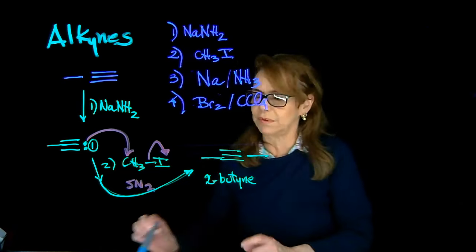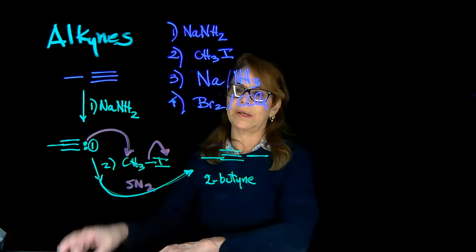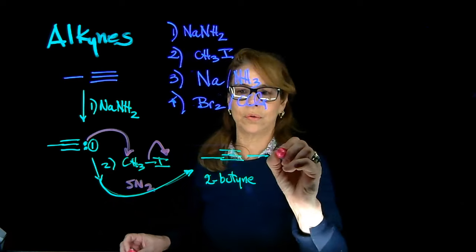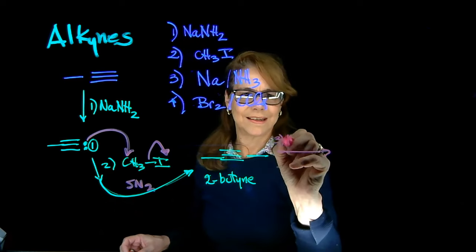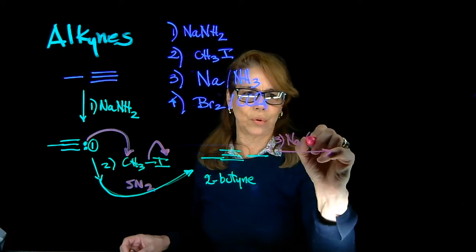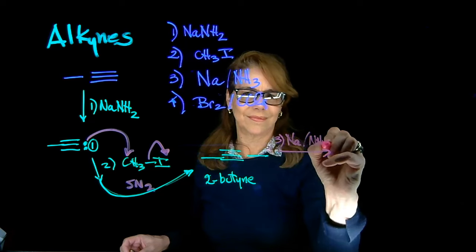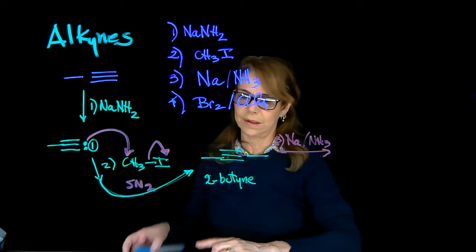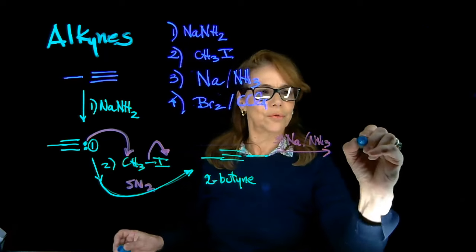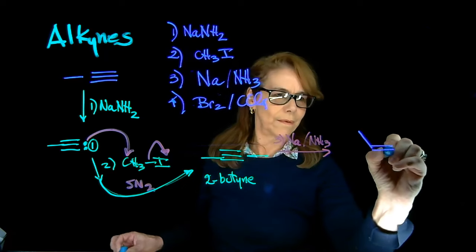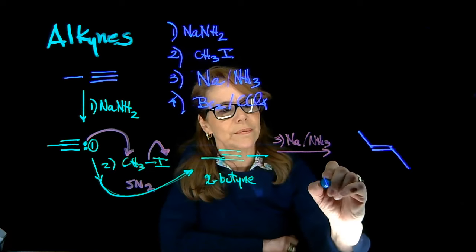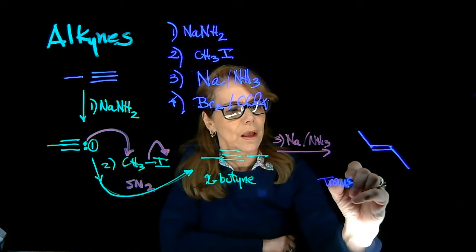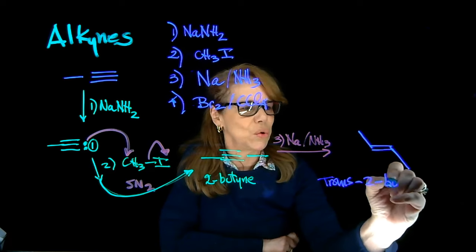So let's draw the product that results after you treat it with sodium. So step three: sodium and ammonia. And the stereochemistry of your product is then trans, right? The trans-2-butene.